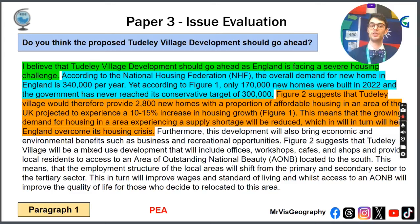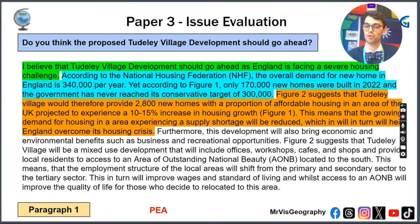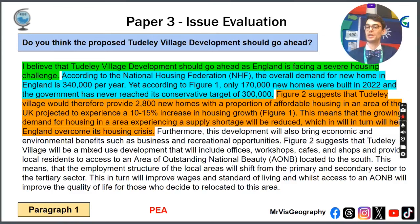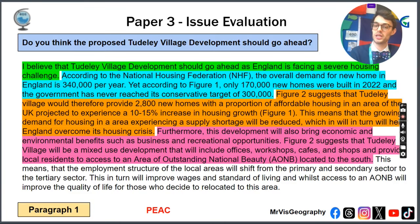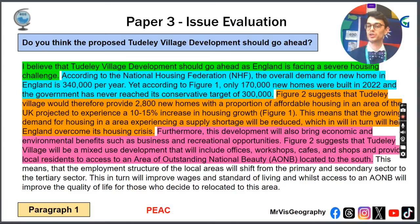Your analysis: figure 2 suggests Totally would bring a further 2,800 new homes, with a proportion as affordable housing, which is good because the area is expected to see an increase of 10 to 15% housing growth — taken from figure 1. This means that growing demand for housing in an area already experiencing a shortage will be reduced, and in turn will help to overcome the crisis. You could also say it brings economic and environmental benefits, discussing the mixed-use development that will include offices, workshops, cafes, and access to an area of outstanding natural beauty.